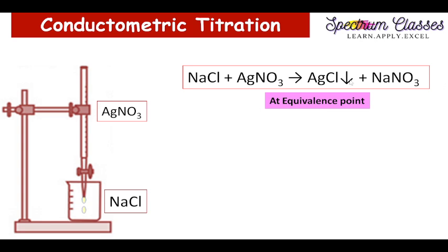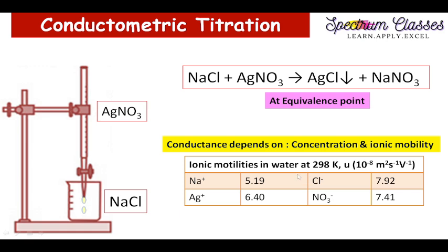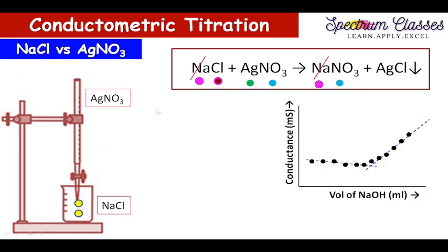At the equivalence point we are having a specific situation which I will explain in the next slide. Here I will tell you on what values conductivity depends — broadly it depends on concentration as well as on ionic mobility. Ionic mobility depends on several factors which I will describe later. Now I have summarized the ionic mobility and will show you the concept behind the decrease and increase of conductivity values.